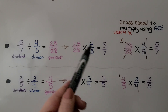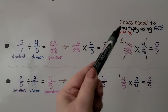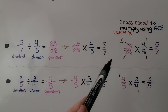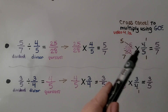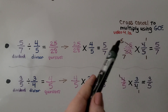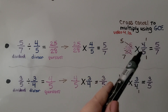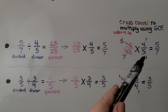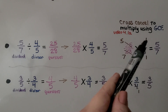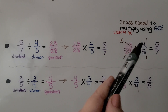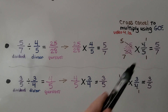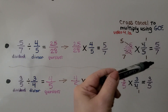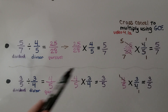We can solve this to double-check and make sure it's correct. We can cross-cancel and multiply using GCF like we learned in video 4.1. Here we have a 25 and a 5 — they have a 5 in common. There are five 5s in 25 and one 5 in 5. For 4 and 28, we can use 4 — there are seven 4s in 28 and one 4 in 4. Then we just multiply across and get 5 sevenths, which is our dividend.